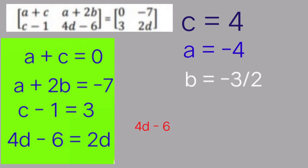Now for the last variable D, we have the fourth equation: 4D minus 6 is equal to 2D, 4D minus 2D is equal to 6, 2D is equal to 6, i.e. D is equal to 3.